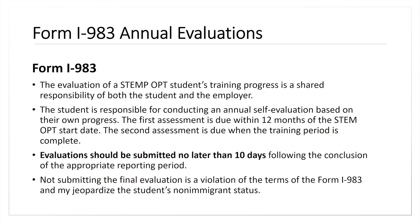We need to stress the importance of the annual evaluations. The annual evaluations are found on the final page of Form I-983. We request that you submit pages one through four when you apply for your STEM OPT, then provide updates, but you must complete the 12-month and 24-month evaluations as your own assessment of your progress. These evaluations should be submitted no later than 10 days following the conclusion of your reporting period. You can submit early, but you need to submit on time.